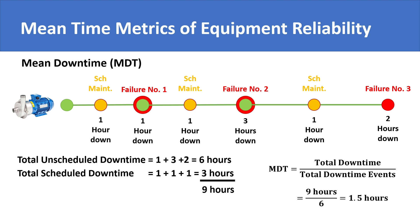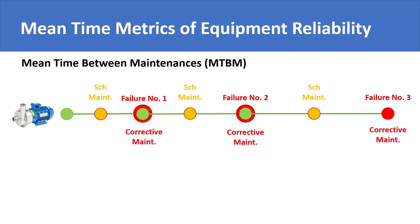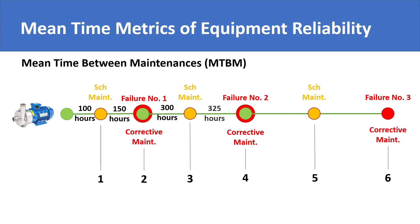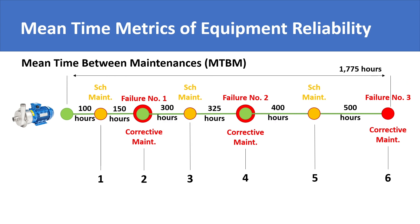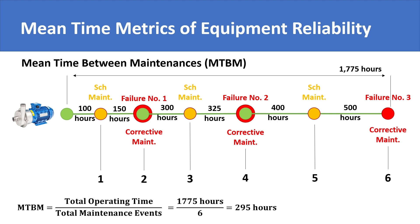The last metric we will study in this lecture is the mean time between maintenances, which is fairly simple to understand from the same pump example. It notes the total number of maintenance actions taken in a given time period, whether scheduled or unscheduled, and the operating time intervals between these maintenance actions. Mean time between maintenance is simply the average operating time between these maintenance actions.